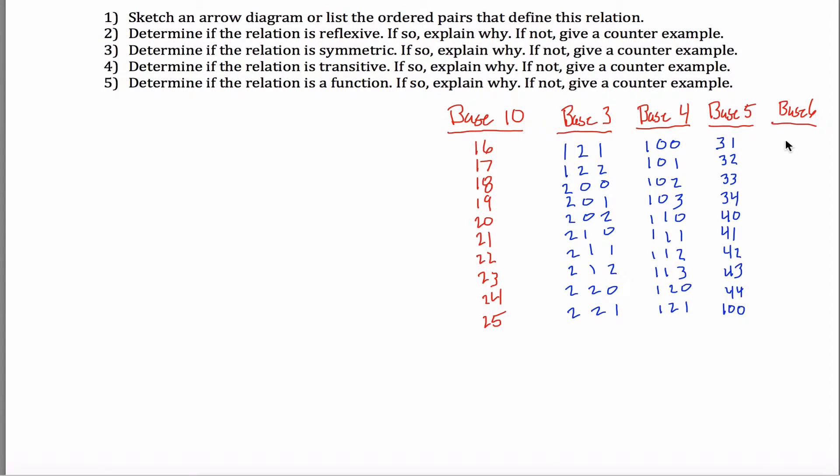And finally, base six. 16, let's see, that's two sixes, that gets me 12. I still need four more, so it'd be two four, and 17 would be two five. Then three zero, three one, three two, three three, three four, three five, four zero, and four one. Okay, now that I have all those, I can define my relation. You can do it with arrow diagrams or by listing the elements. I'm going to list the elements.